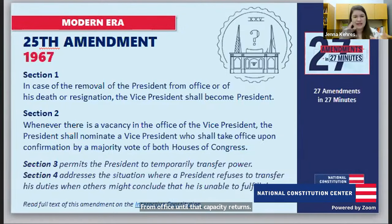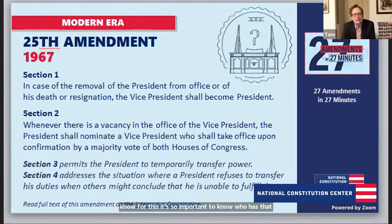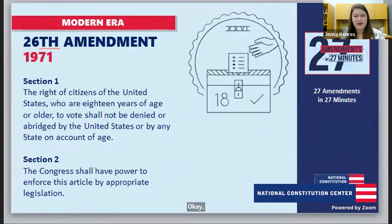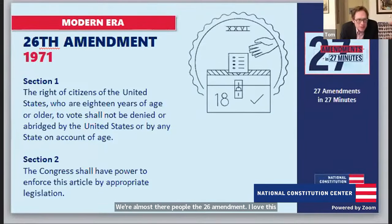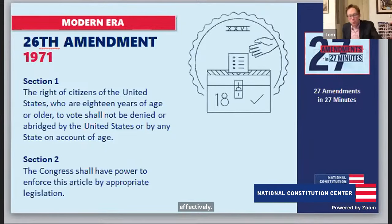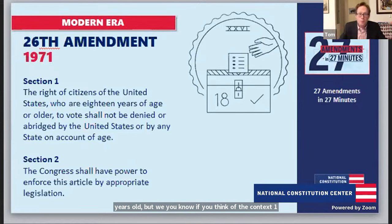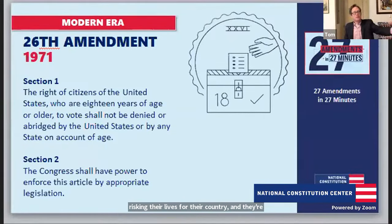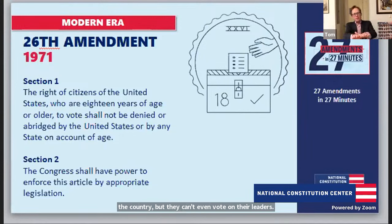The Constitution focuses on broad strokes, but for presidential power it's so important to know who holds it that they had to put these details in. The 26th Amendment — the fastest amendment to get ratified — was ratified in 1971 in under four months. It sets the national voting age at 18 years old. Prior to this, most states had the voting age at 21. The context: during the Vietnam War, people were being shipped off to risk their lives for their country while under 21, so they could give up their lives but couldn't vote on their leaders. The American people concluded this was wrong.